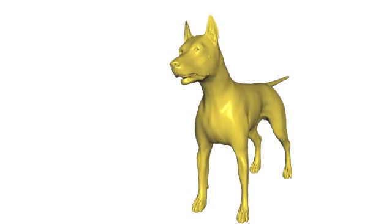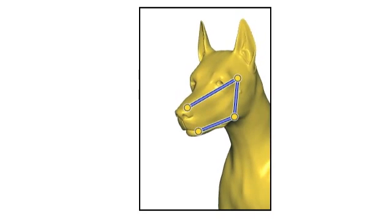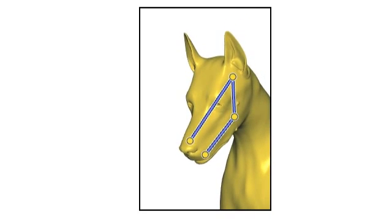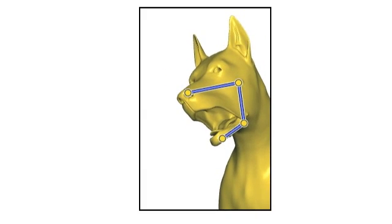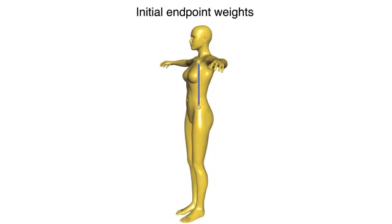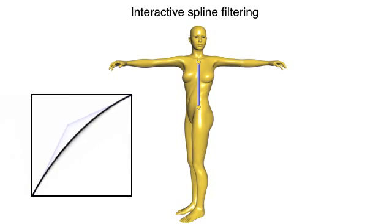Stretchable bones facilitate exaggerated actions. Animators regard exaggeration as a basic principle to produce the illusion of life. Stretchable twistable bones give animators more artistic freedom. Endpoint weights may be filtered interactively using spline filters common in animation environments.